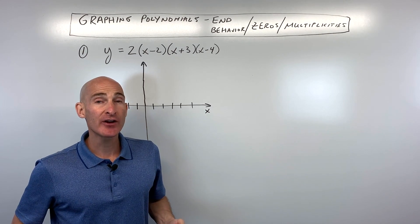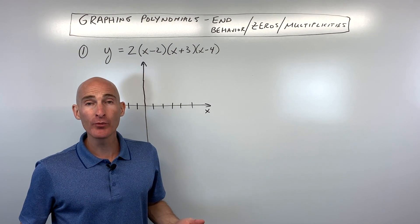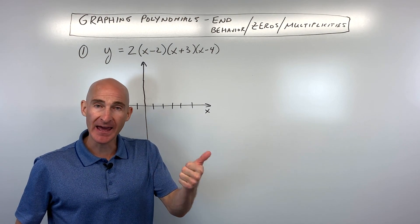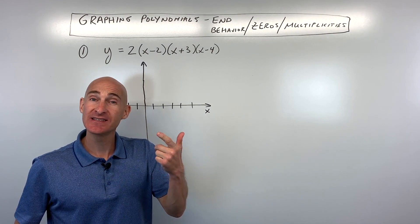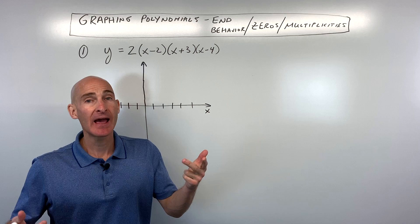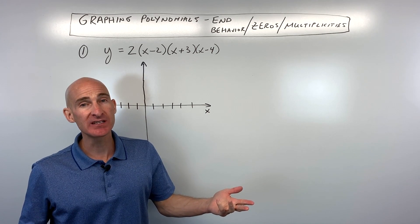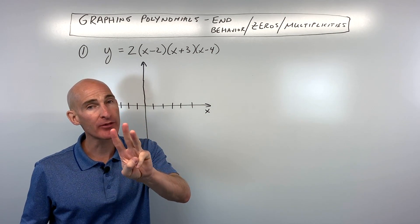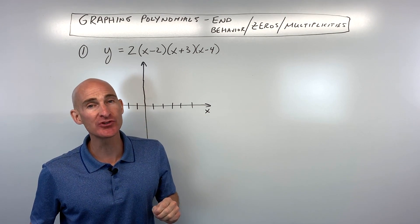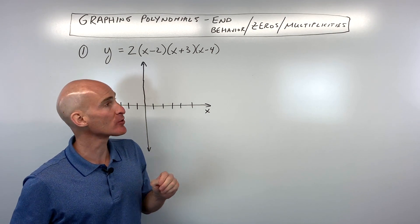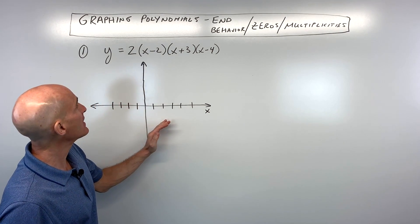In this lesson, you're going to learn how to graph polynomials using end behavior, zeros, and multiplicities. We're going to go through three examples so you can understand how to work with this concept.